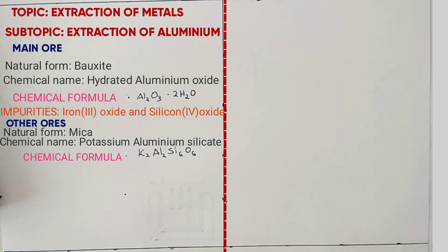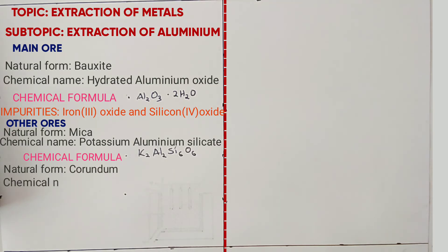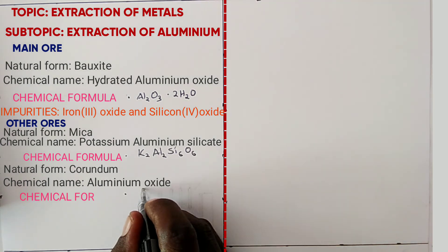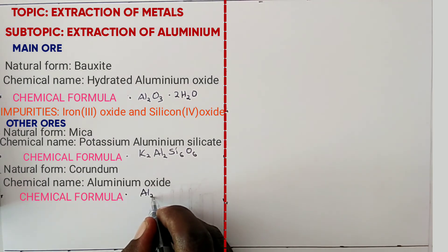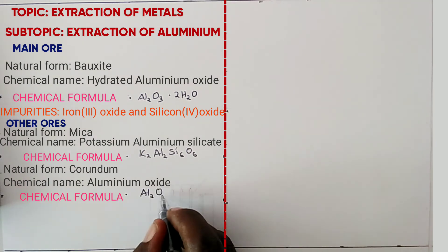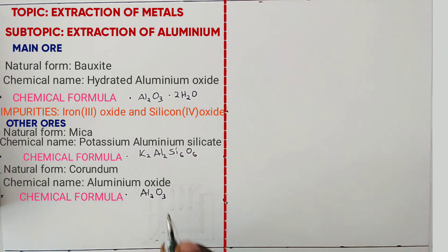The next ore in its natural form is called corundum. The chemical name is aluminium oxide. The chemical formula is Al2O3.